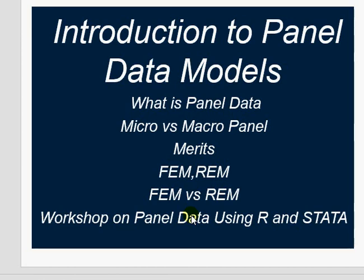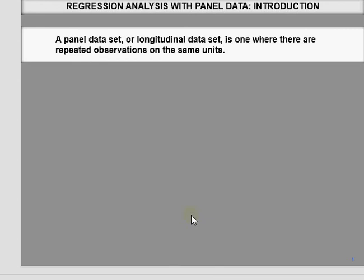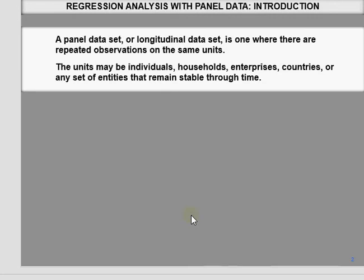The last video will be a workshop on panel data using R and Stata. Panel data — another name is longitudinal data — is one where you have repeated observations on the same units or entities at regular intervals of time. Cross-sectional data is data at a point in time; time series data is at regular intervals. Panel data is a combination of both.